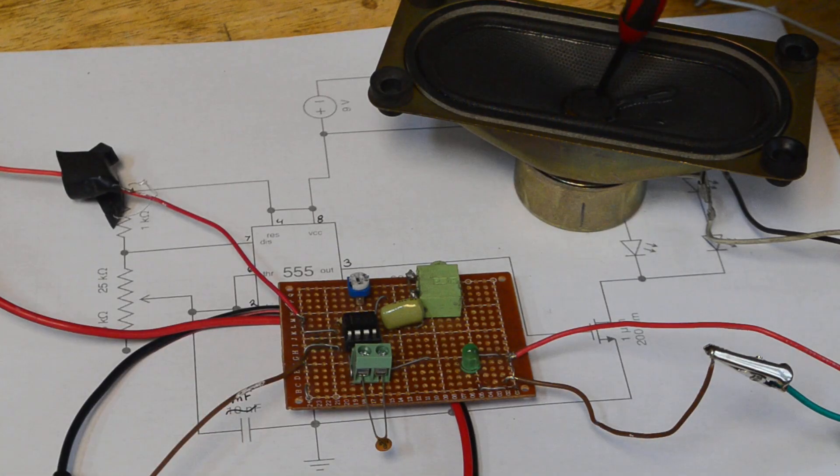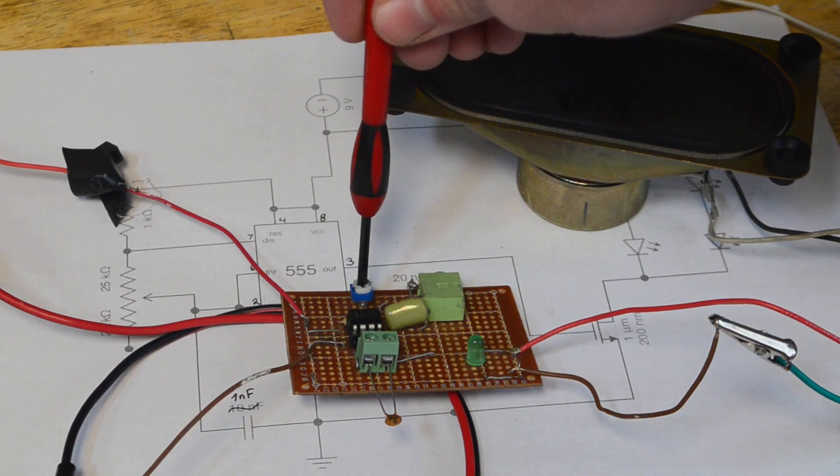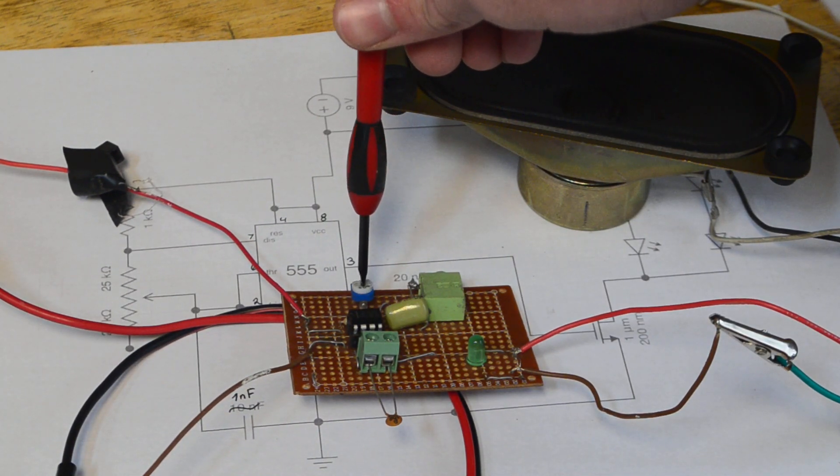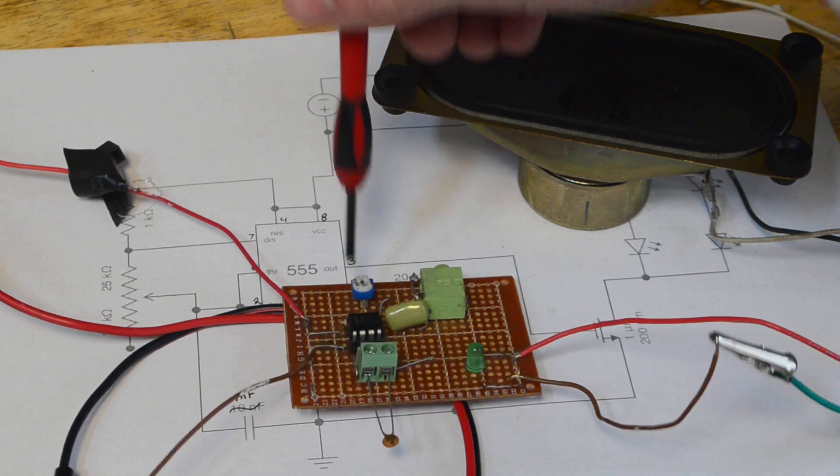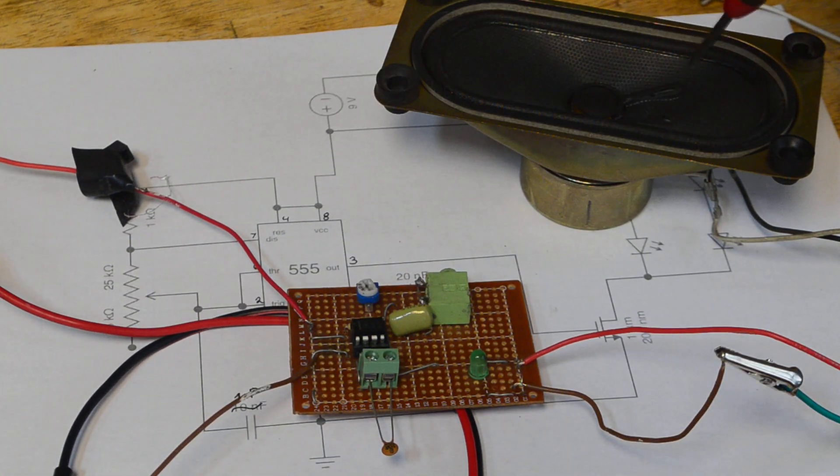Now I'm going to go ahead and turn on the power supply. As you can hear we're getting quite a high-pitched sound from this speaker. So I'm just going to put this screwdriver here and turn this potentiometer until we can't hear it. It seems that I found a nice spot right here where I can't hear anything coming out of the speaker yet the frequency is still going.